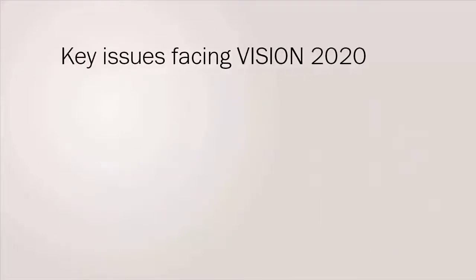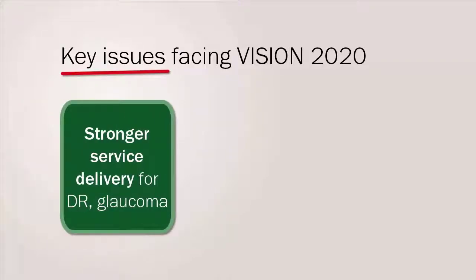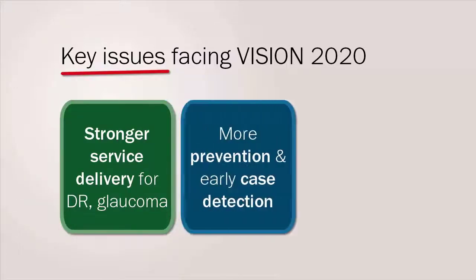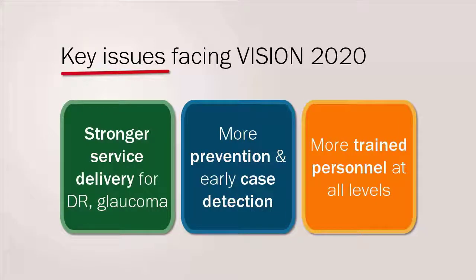As the Vision 2020 initiative has moved forward, it has become apparent that it faces some key issues. Stronger service delivery is needed for the growing numbers of patients with diabetic retinopathy and glaucoma. More blindness prevention and early case detection is needed to reduce the number of blind years people experience, especially children. And more trained personnel in eye care are urgently needed at all levels, and especially in Africa.